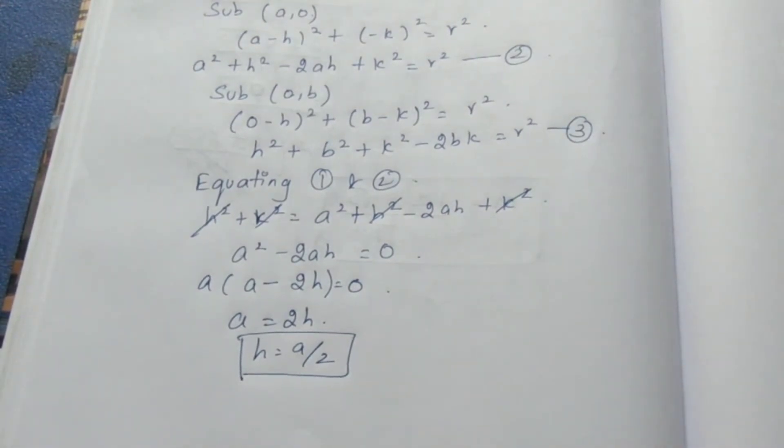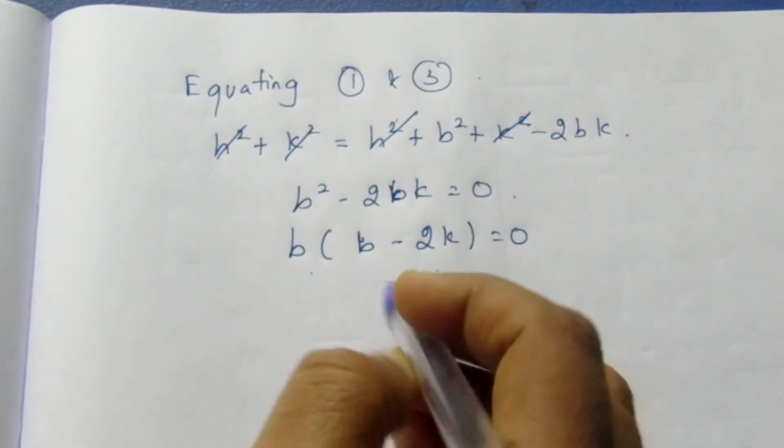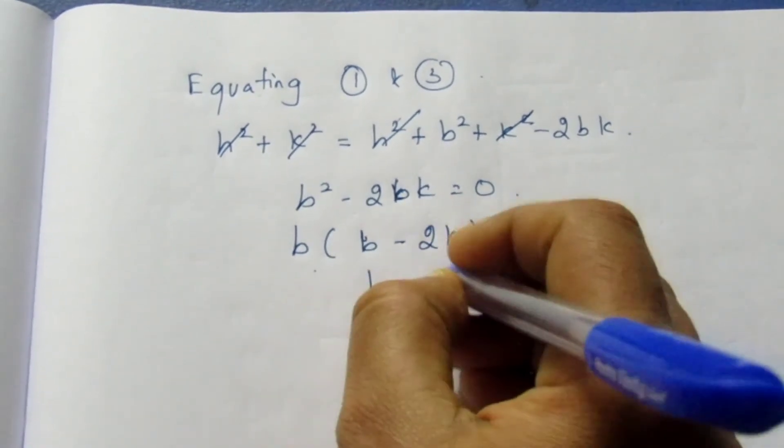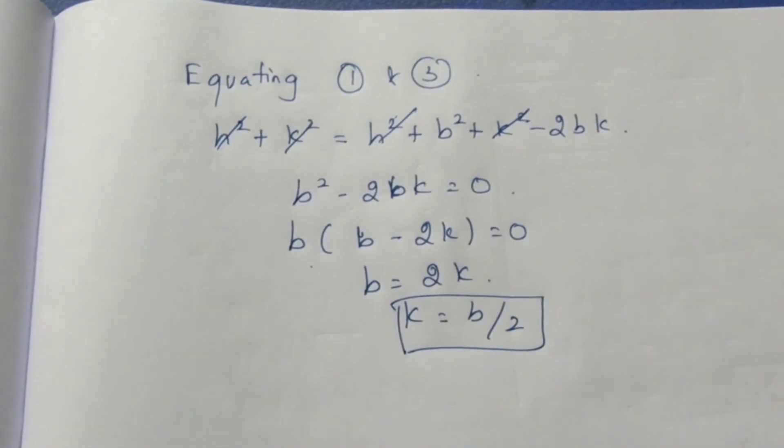Same way, equating equations 1 and 3, both equal to r²: h² + k² = h² + b² + k² - 2bk. Now h² + k² cancel, giving b² - 2bk = 0. Taking b common: b(b - 2k) = 0. So b = 2k, which gives k = b/2. We have found h = a/2 and k = b/2.